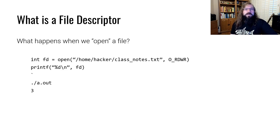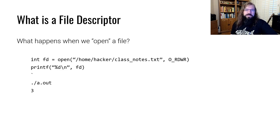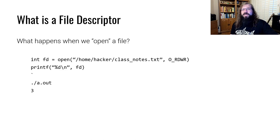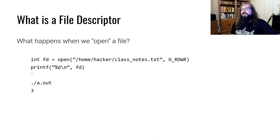Read and write operate on something known as a file descriptor. Typically, a file descriptor is obtained through the use of the open syscall. We may do something like open /home/hacker/classnotes.txt, and that's going to return a file descriptor. Looking at our code example, we see that the file descriptor is an integer. We can even call printf on that integer to figure out what the value is. Most of the time in your own code, the first file you open is going to return file descriptor 3.